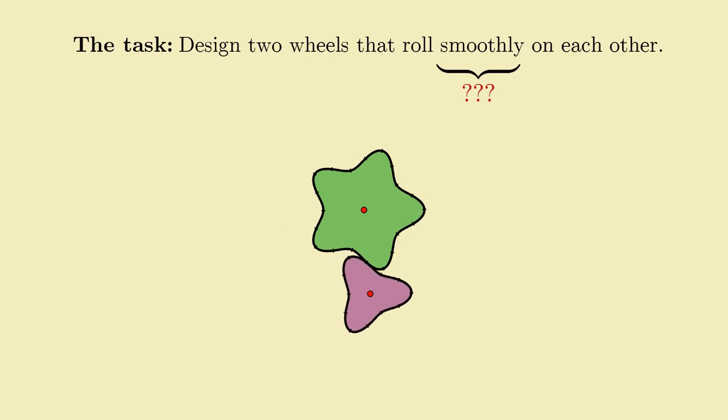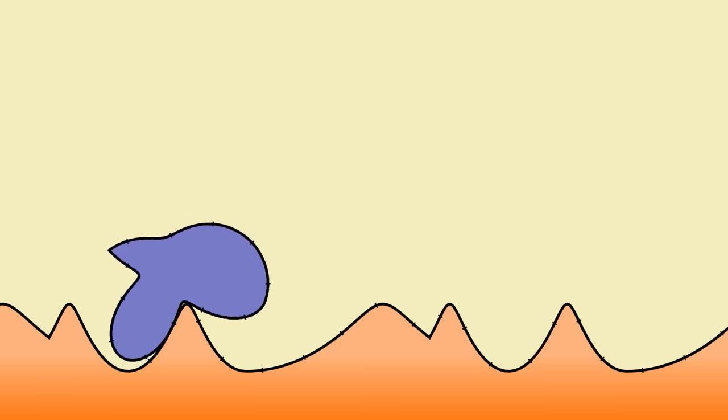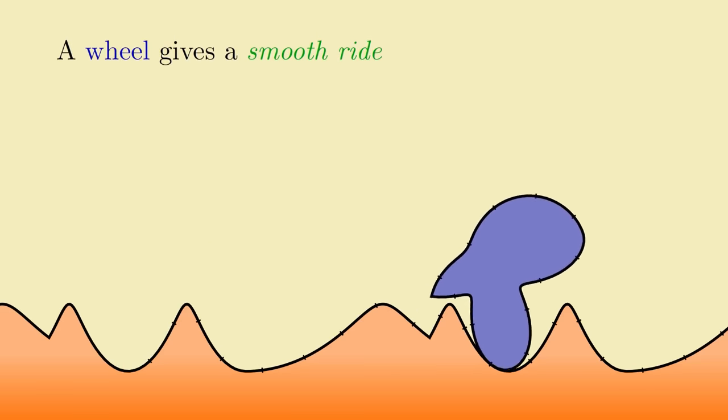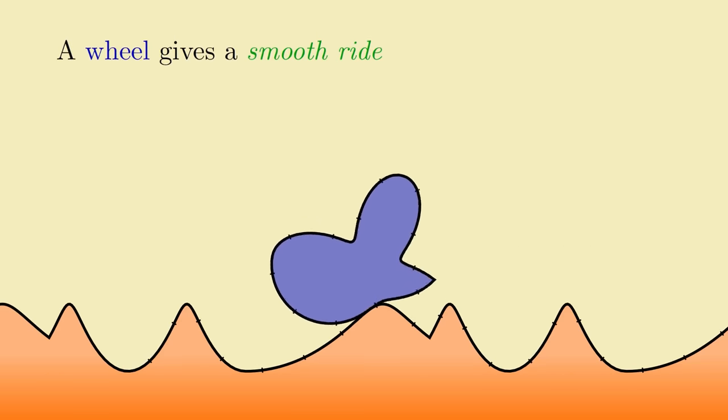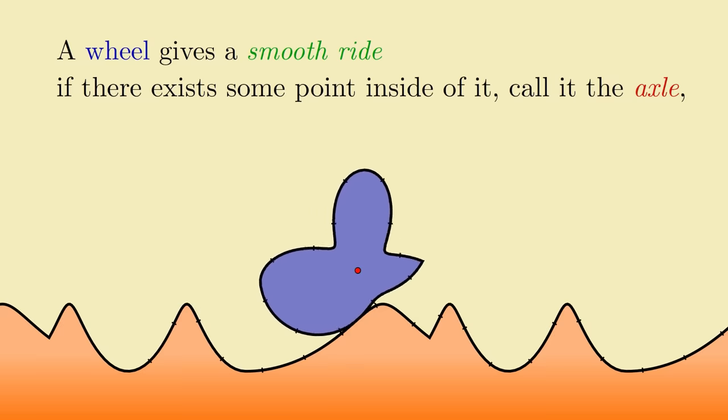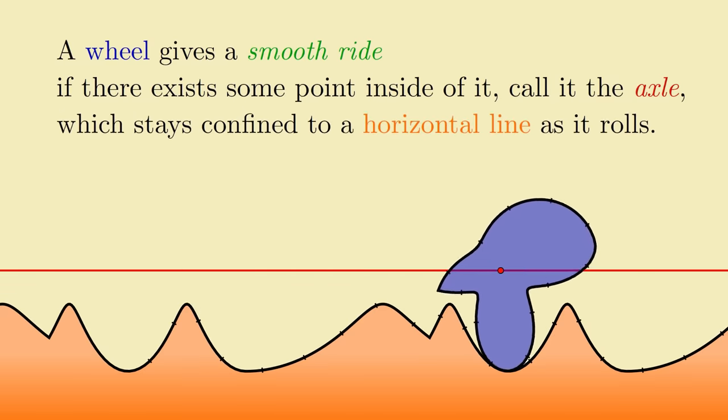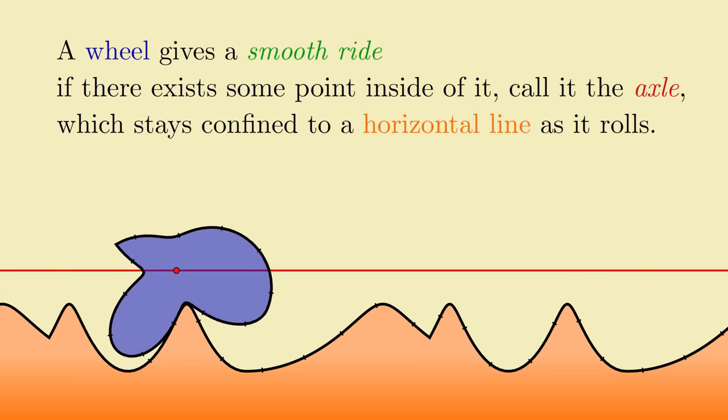Just like with the road and wheel problem, the first thing we need to do is decide what smooth rolling should mean. For a wheel rolling on a road, we decided that it rolls smoothly over that road if there's some point inside it, which we called the axle, whose path stays confined to a horizontal line as the wheel rolls.